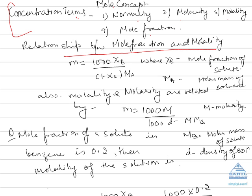This is important because it has some questions in AIEE based on the relationship between mole fraction and molality. There is a direct relation like molality is equal to 1000 times xi_b, where xi_b is the mole fraction of the solute, over 1 minus xi_b times Ma, where Ma is the molar mass of the solvent.